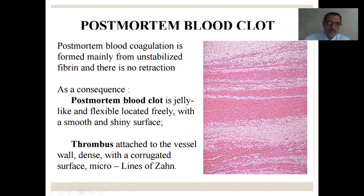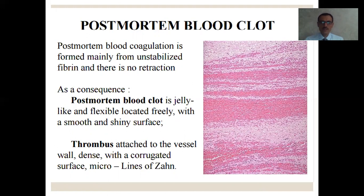Post-mortem blood coagulation is formed mainly from unstabilized fibrin and there is no retraction. So sometimes in autopsy we must differentiate the postmortem blood clot from the vital thrombus. The postmortem blood clot is jelly-like and flexible, located freely within the vessel. But the thrombus is firmly attached to the vessel wall.